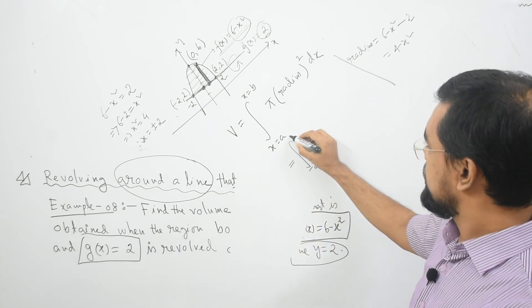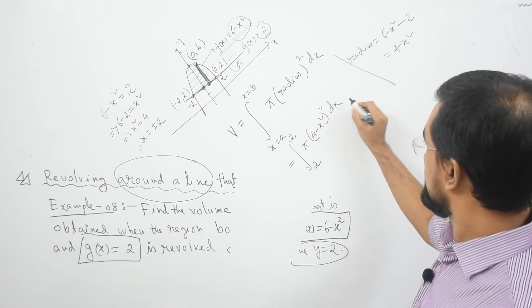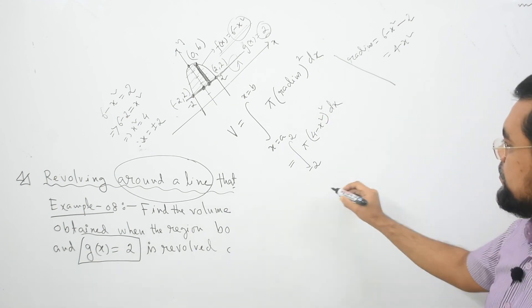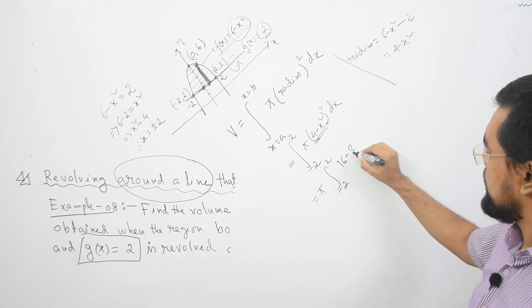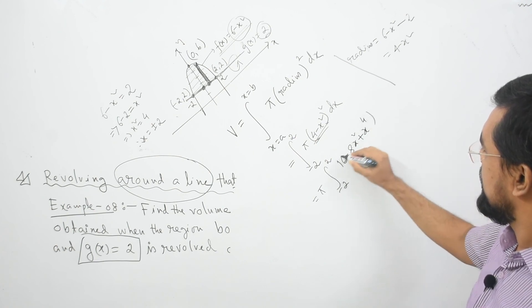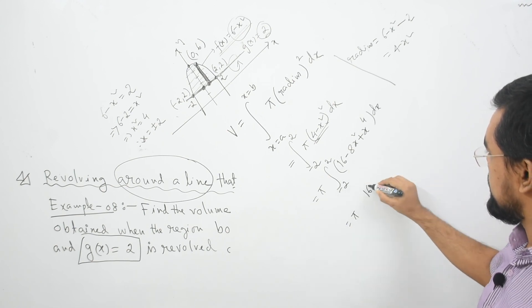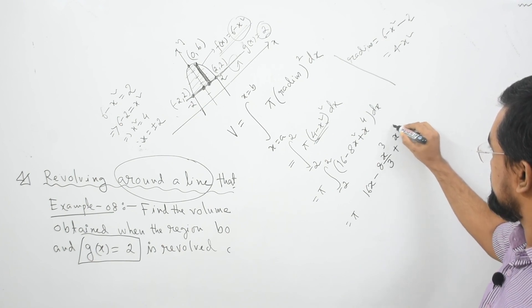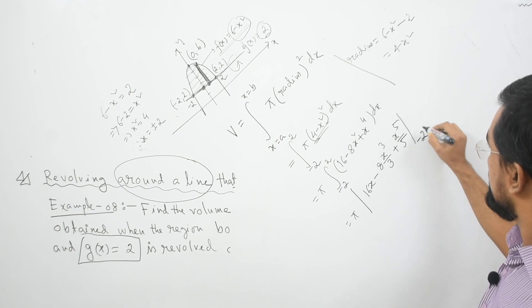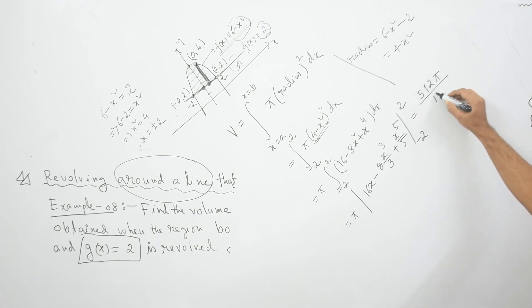So the integral is from negative 2 to 2 of π times (4 minus x²)² dx. Expanding: (4 minus x²)² equals 16 minus 8x² plus x⁴. Integrating: π times [16x minus 8x³/3 plus x⁵/5] from negative 2 to 2. Evaluating this expression gives the answer 512π/15. So this is the volume of the given solid material.